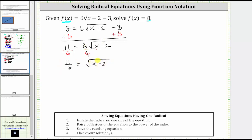Now that we've isolated the square root, to undo the square root, we now square both sides of the equation.